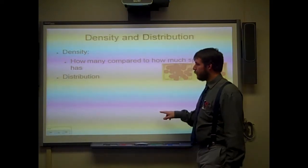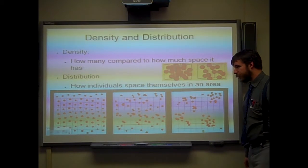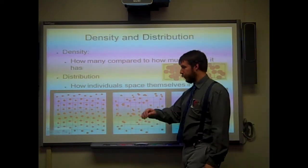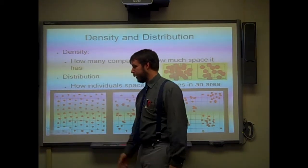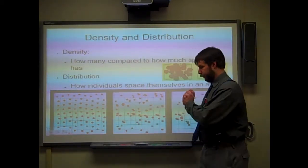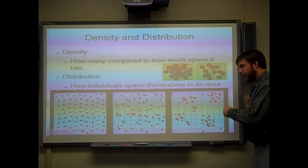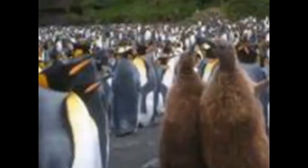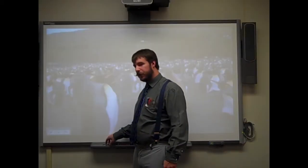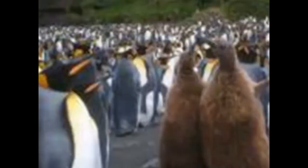In addition to density, we also have distribution — that's just how they spread themselves out. We have three examples. We have evenly spaced: if this area was a nice grid, they're evenly spaced. You can also have randomly spaced — they're just there. And then clumped spacing, where they're clumped into different areas. Here's a picture of some penguins, and you can see they are all pretty much evenly spread out.